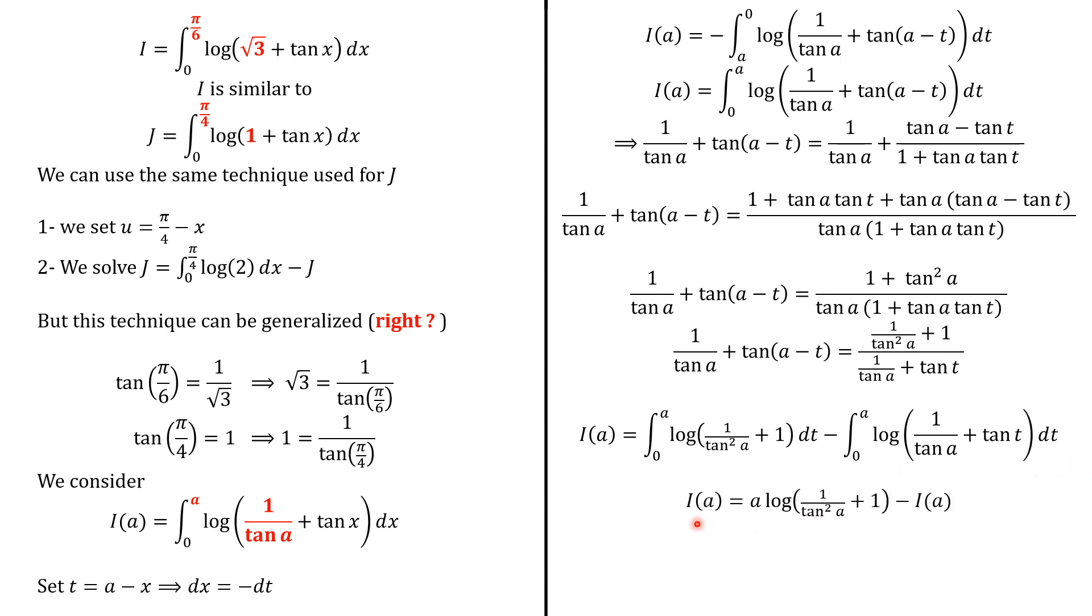So i of a equals this, because actually this is a constant, so we multiply this constant by the length of the interval, which is a, so it is a multiplied by log of 1 over tangent squared of a plus 1 minus i of a. And then we can have the value of i of a, and this is it.